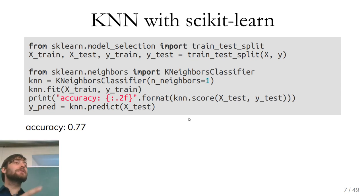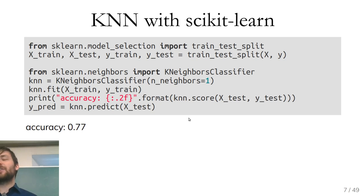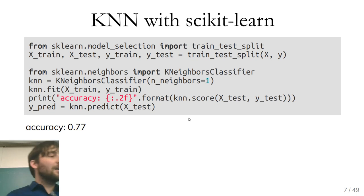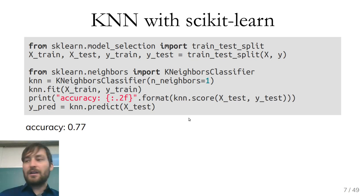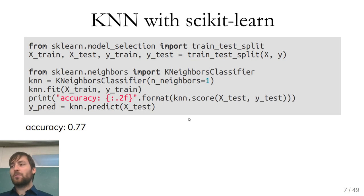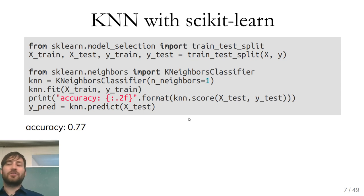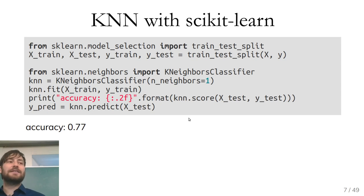The prediction stored in y_pred is a one-dimensional vector — for each point in X_test, it says 0 or 1 indicating whether the model predicted red or blue.